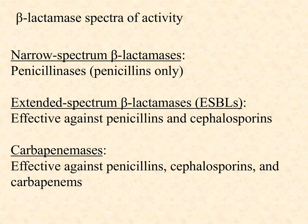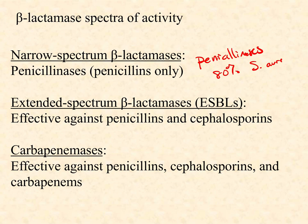There are three major groups of beta-lactamases based on which antibiotics they're effective against. The penicillinases break apart the penicillin class only — these are narrow-spectrum beta-lactamases that don't touch cephalosporins or carbapenems. They're extremely common: it's estimated that about 80% of all Staphylococcus aureus bacteria causing infections in the United States carry a penicillinase, meaning we're not likely to prescribe a penicillin when we suspect Staphylococcus aureus.